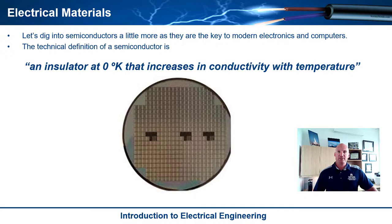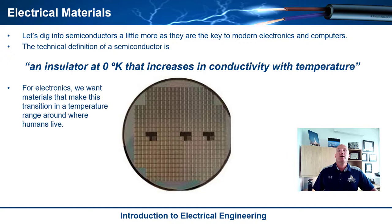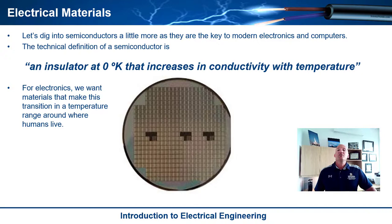We as humans are interested in materials where that transition from mostly an insulator to mostly a conductor happens within the temperature range where we live. There are certainly semiconductors where that transition happens at like one degree Kelvin, but that's too cold to be practical. We want materials that make that transition in the temperatures that humans live in. Guess what does that? Silicon. It's a beautiful semiconductor.